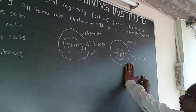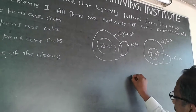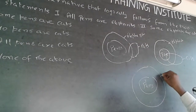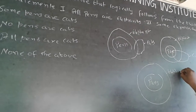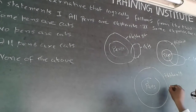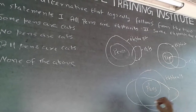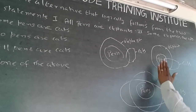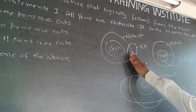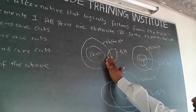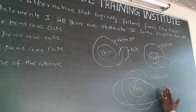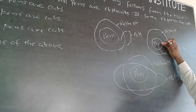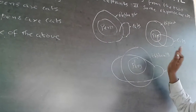I can also draw one more diagram where pens become a subset of elephants — all pens are elephants — and I can draw the cats circle such that all pens are getting matched with cats as well. So across all three diagrams, the pen and elephant position remains the same; only the cats position changes. Here no pens are cats, here some pens are cats, here all pens are cats. So the answer could be no pens are cats, some pens are cats, or all pens are cats.